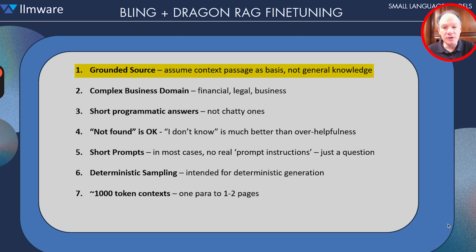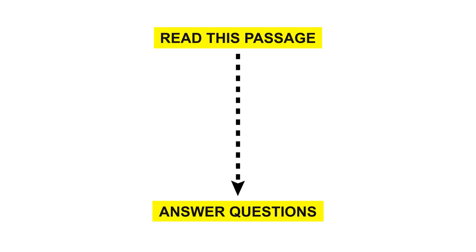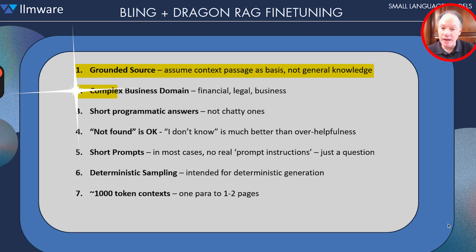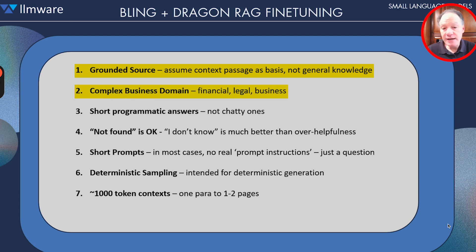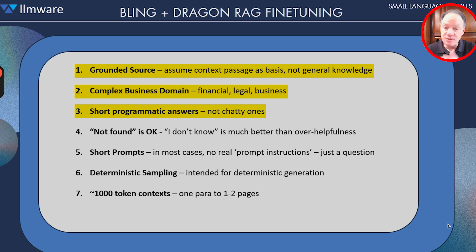We want them to be largely like reading comprehension in the old SATs: read this passage, answer questions, or perform some analysis based on that passage. So it's all grounded source and all complex business domains. What we're looking for are not nice chatty answers — we want very short answers that are just the facts, answering the question in a way that becomes easier to handle programmatically or to weave into some larger workflow.